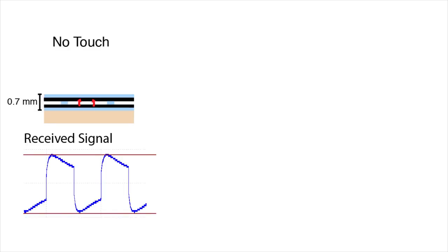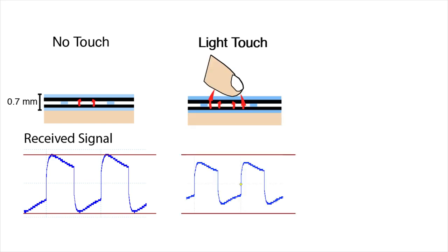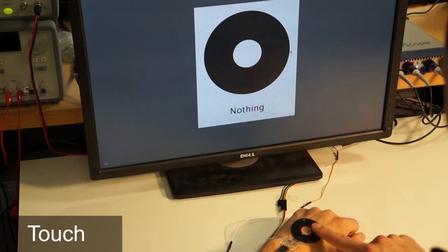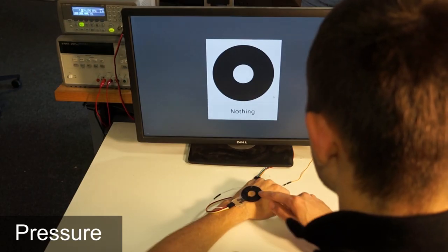A square signal is transmitted by the lower electrode and received in the top electrode. Bringing a finger close to an electrode reduces the mutual capacitance. This decreases the amplitude of the received signal. Pressure creates a contact between both electrodes and closes the circuit. The wave signal is directly transmitted. This allows for sensing light touch and pressure.